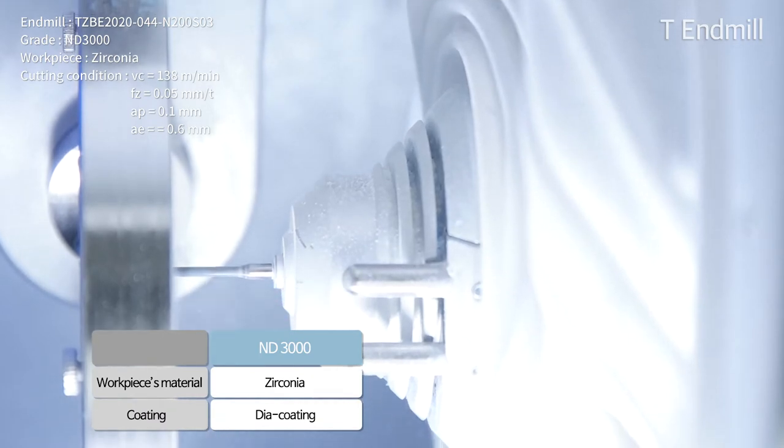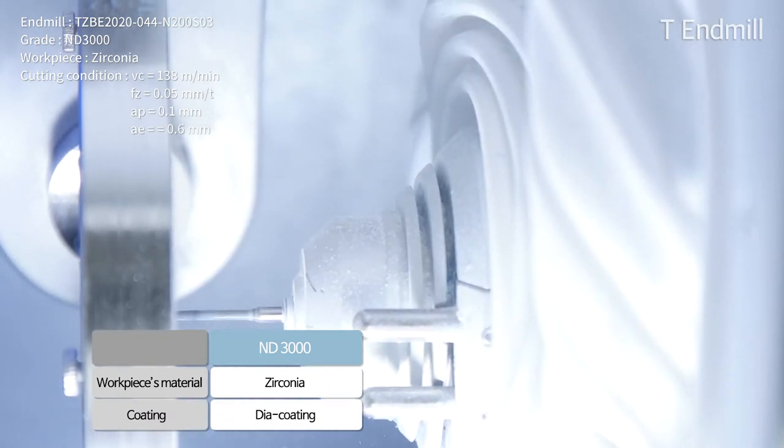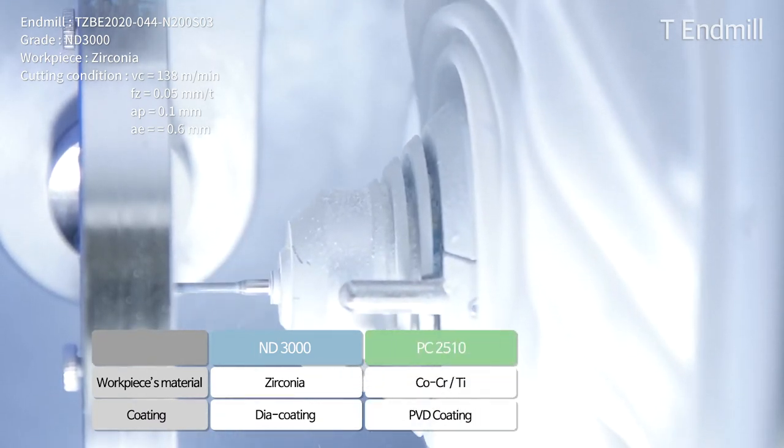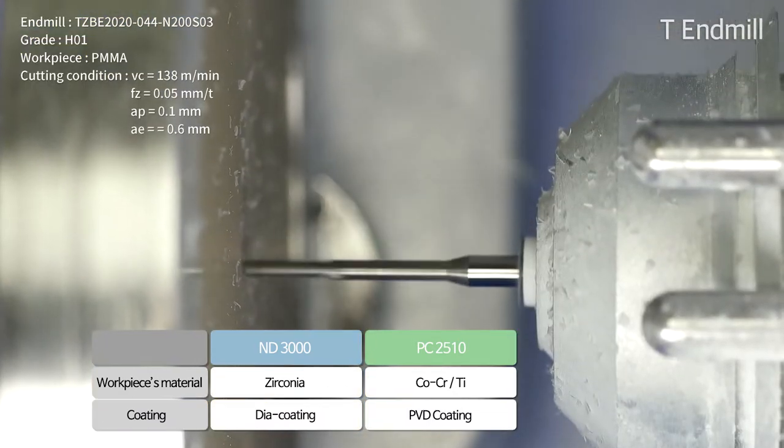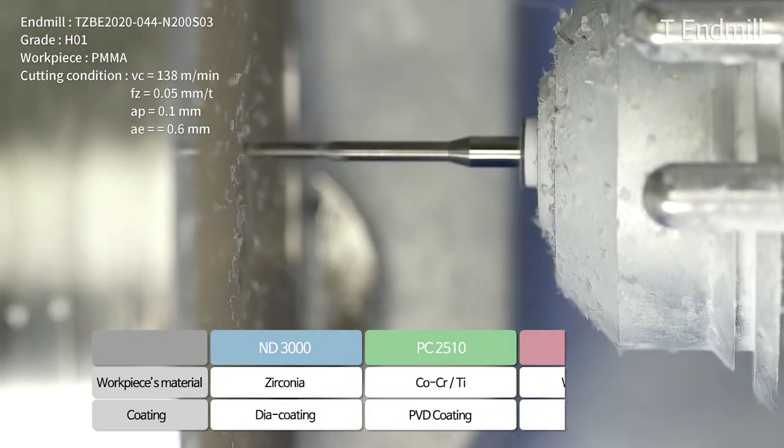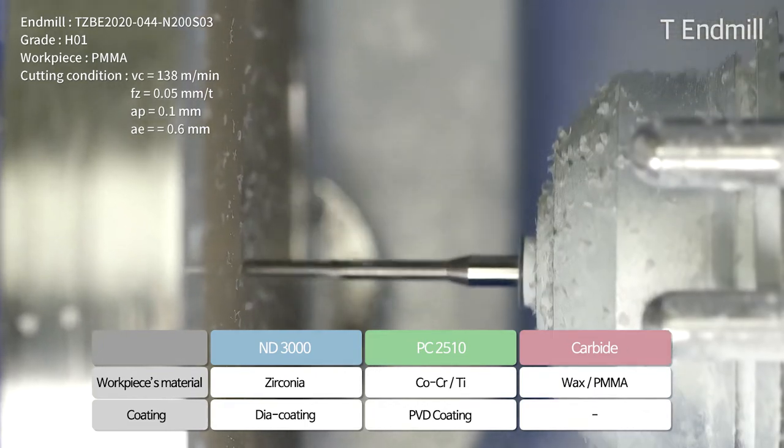Select our diamond coating grade ND3000 for zirconia machining, PVD coating grade PC2510 for metal machining, and non-coated grade for wax and PMMA machining.